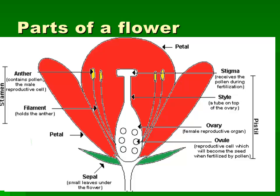Before learning about pollination, we have to familiarize ourselves with the parts of a flower. The colorful part of the flower is the petal. Sepal is the green color part found under the petal. Anther contains the pollen grains. The yellow grains which you see in the hibiscus flower are pollen grains.